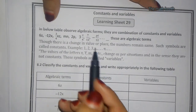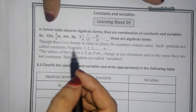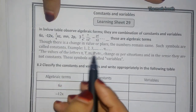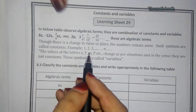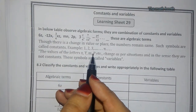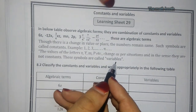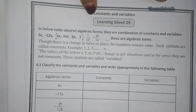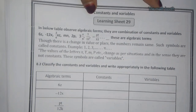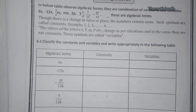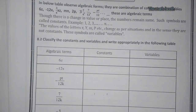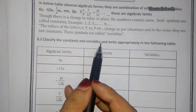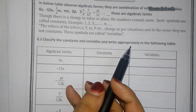Variables get changed as per the situation. The alphabets which change as per the situation are called variables. Now let us see how to find constants and variables, and classify them into the appropriate table.